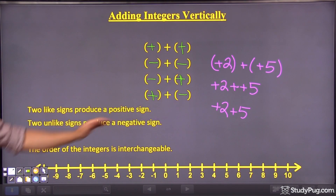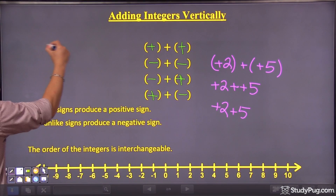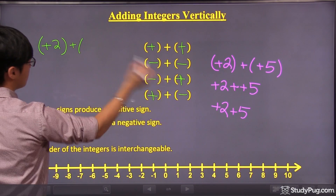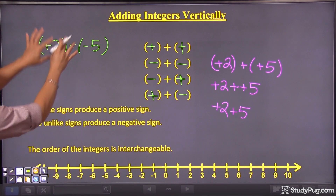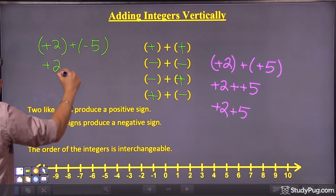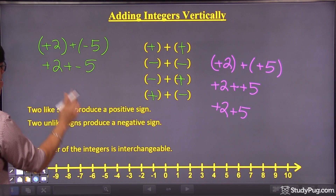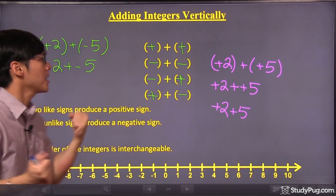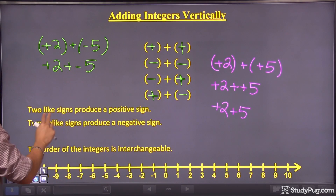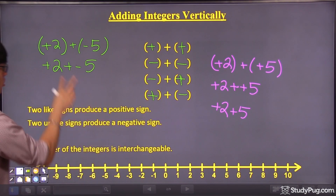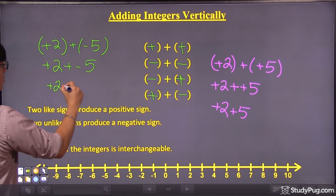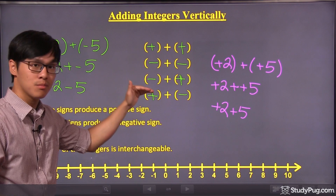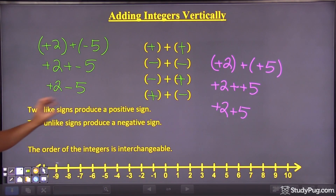Next fact: two unlike signs produce a negative sign. Using the same example but changing positive five to negative five — if you remove the brackets, you get positive two plus negative five. Here we have a plus and a minus, which are unlike signs, meaning they are opposite. Together they produce a negative sign. So we simplify that to positive two minus five.